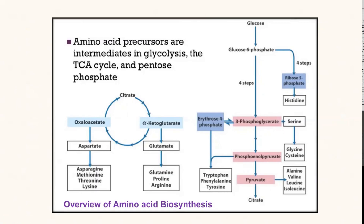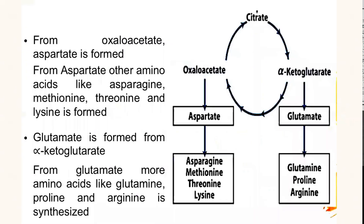These are also being formed from phosphoenolpyruvate as well. Pyruvate takes part in the synthesis of alanine, valine, leucine, and isoleucine. The intermediaries of the citric acid pathway, oxaloacetate and alpha-ketoglutarate, also act as precursor molecules for the formation of different amino acids. Aspartate is formed from oxaloacetate, and aspartate in turn acts as a precursor molecule for the formation of many different amino acids like asparagine, methionine, threonine, and lysine.